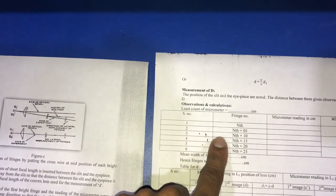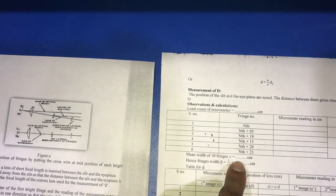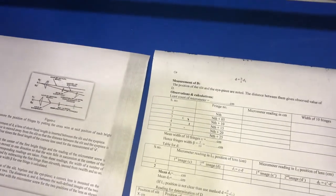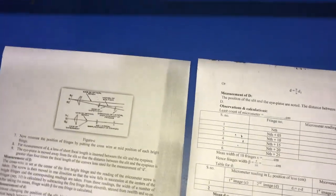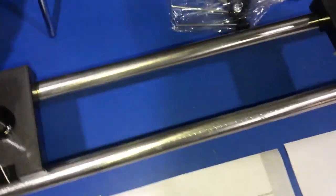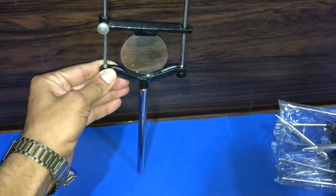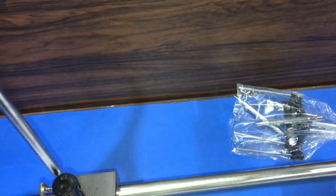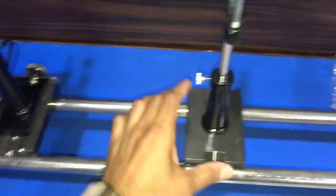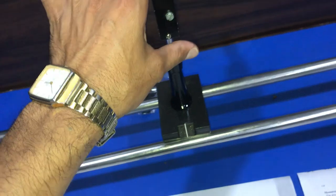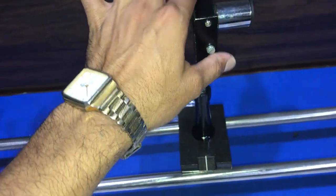We repeat this process till we reach the n plus 25th fringe. In the next step we calculate the distance between the two sources. For that we use the convex lens of 10 centimeter focal length. We insert the lens in the fourth upright and properly shift it.